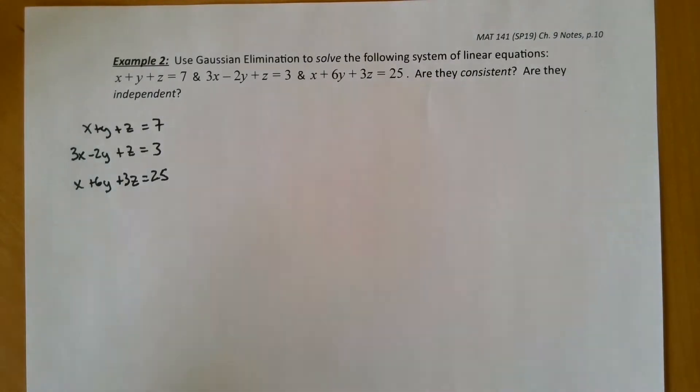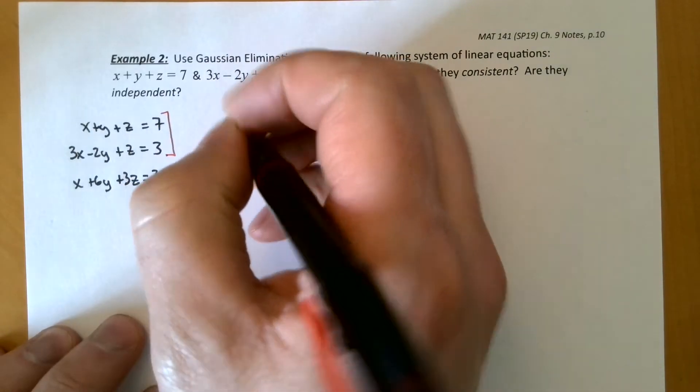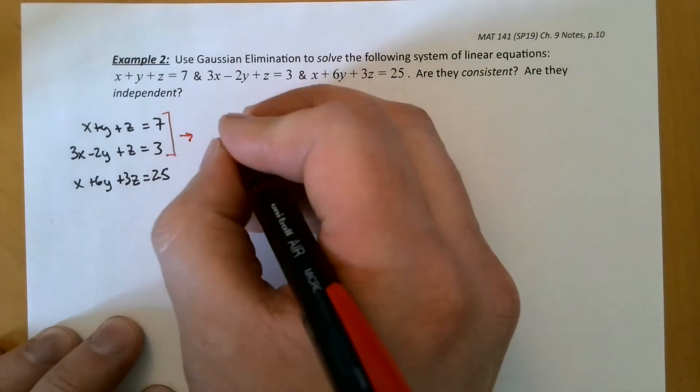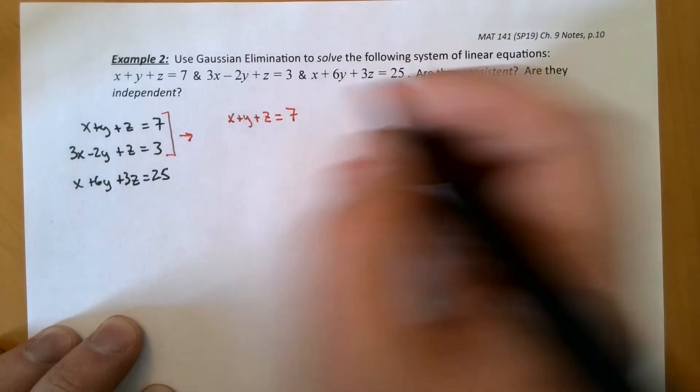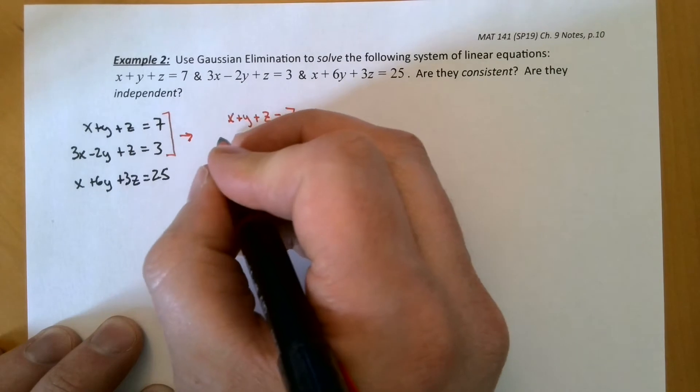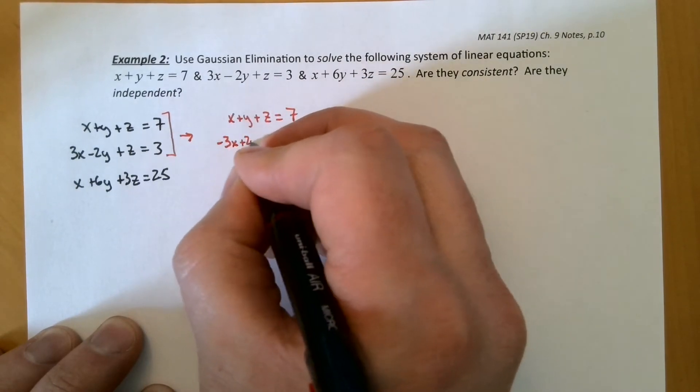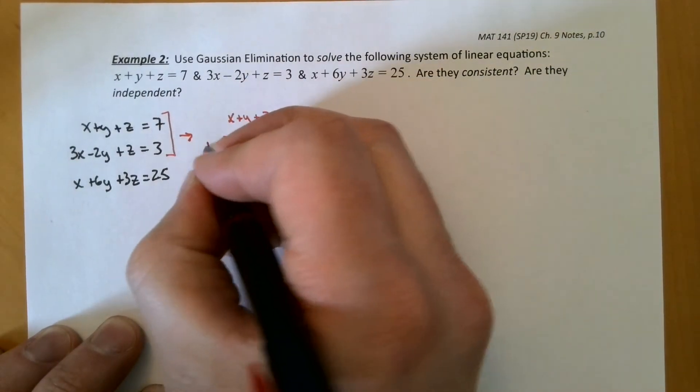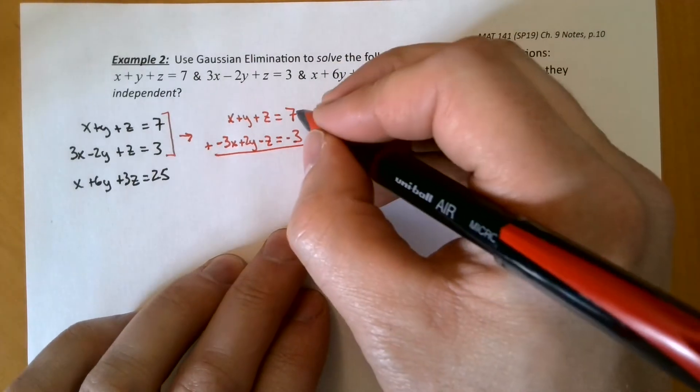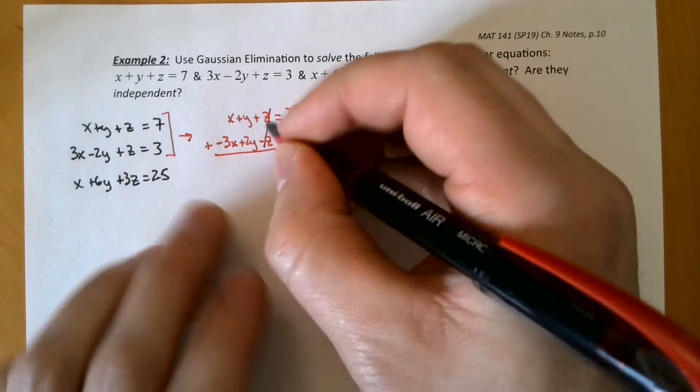So I think I'm just going to take the first two and I'm going to subtract them because they have matching Z's. So I'll have X plus Y plus Z equals 7. And what I'm really going to do is multiply by negative 1 and then add. So negative 3X plus 2Y minus Z equals negative 3. I'm going to add these two equations together and see what we get. So 7 minus 3 is 4.